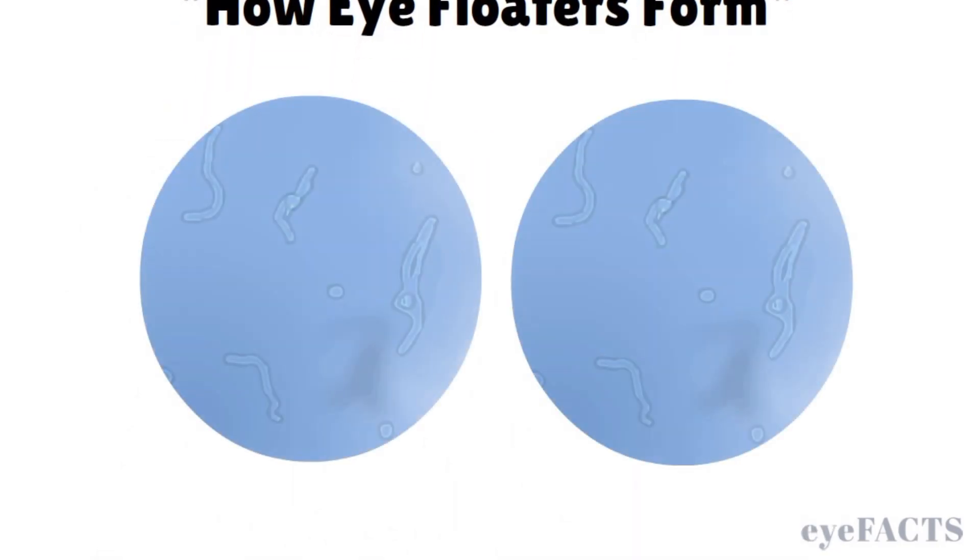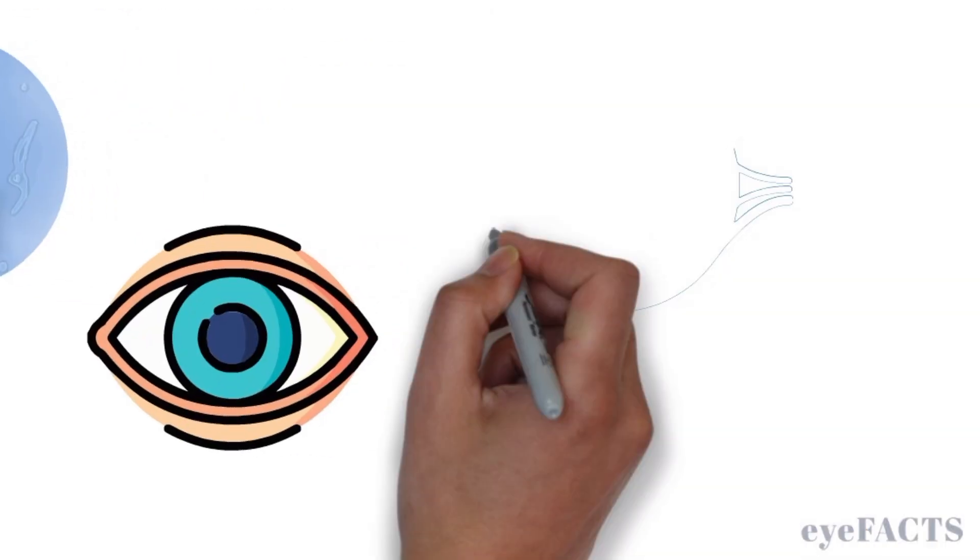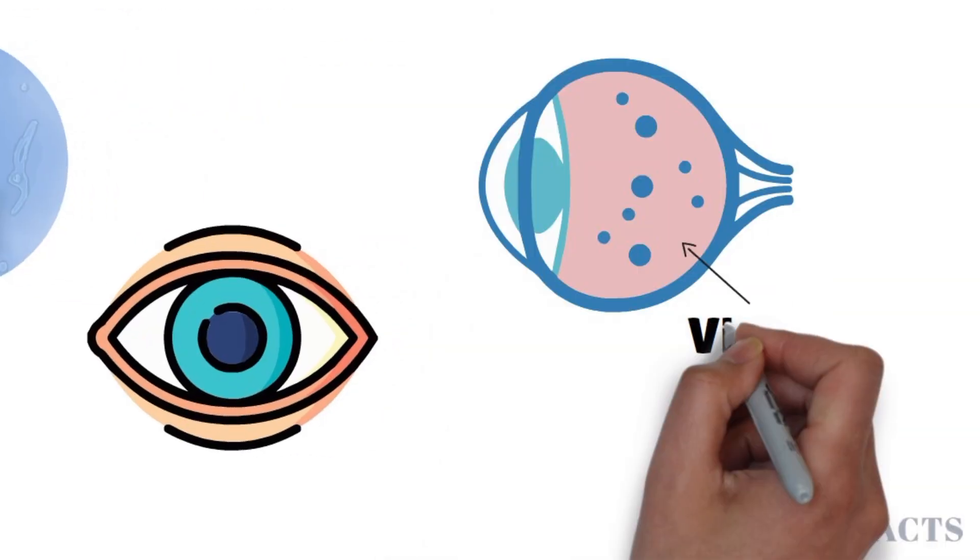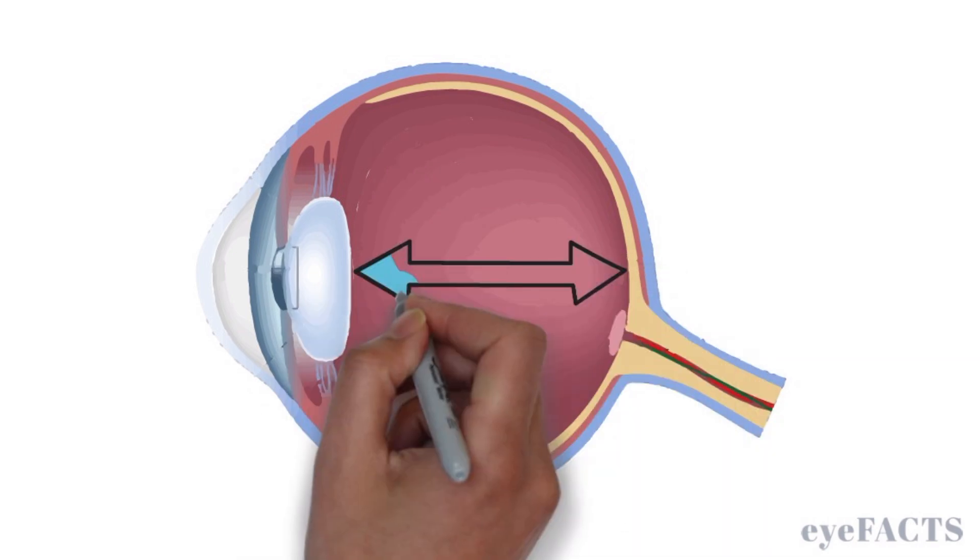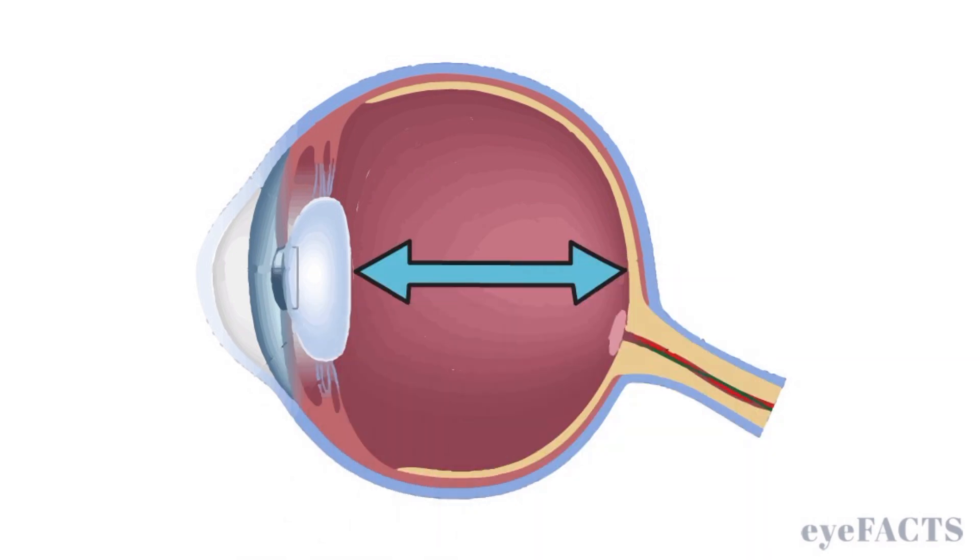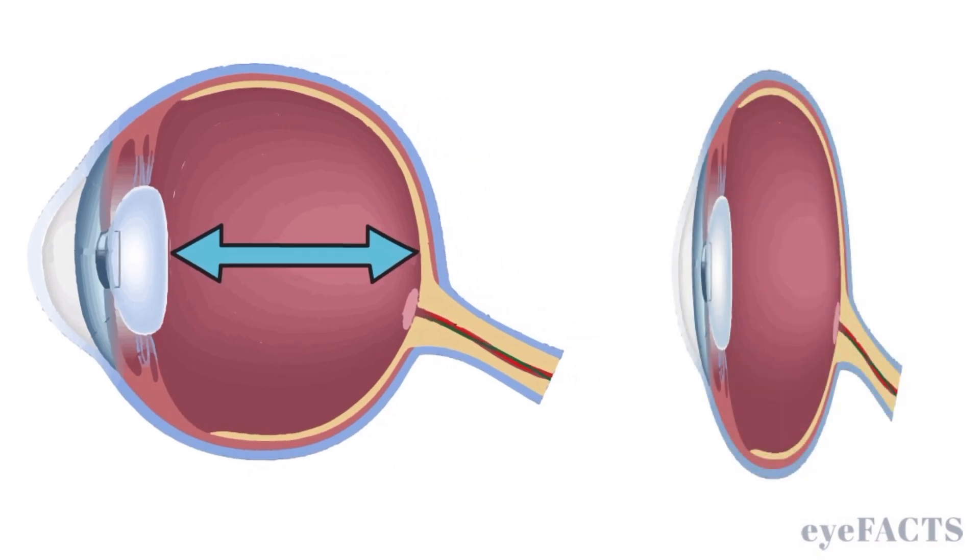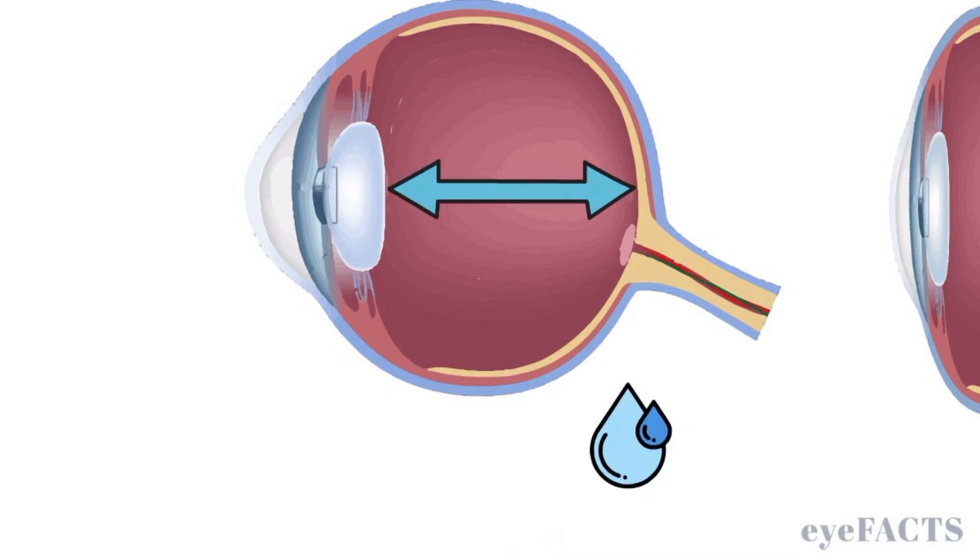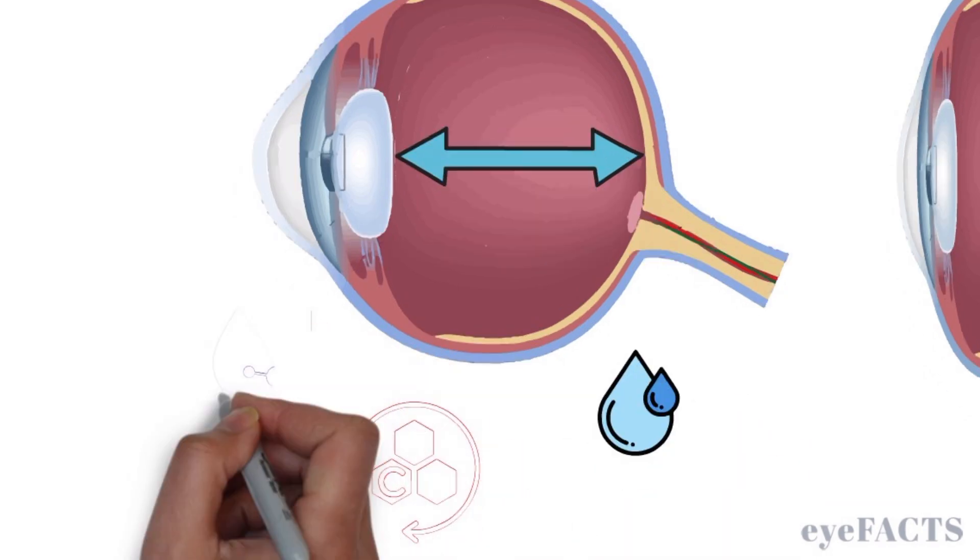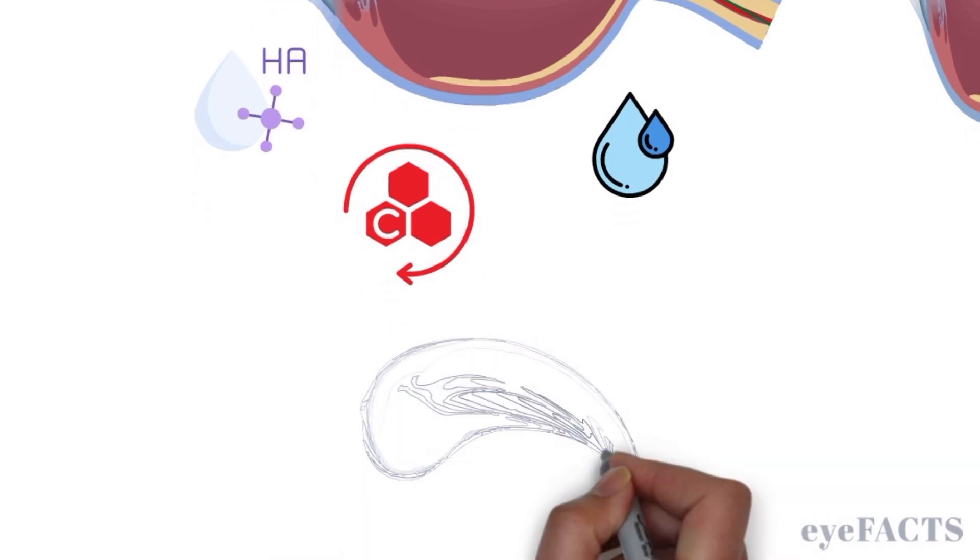Eye floaters are caused by changes in the anatomy and structure of your eye, specifically changes inside the vitreous. The vitreous is a gel-like substance that fills the space between the lens and the retina of the eye. Without the vitreous, the eyeball would not be able to maintain its shape. The vitreous is mostly water but also contains collagen and hyaluronic acid, which gives it a transparent, gel-like consistency.